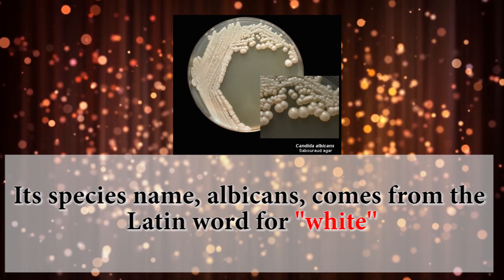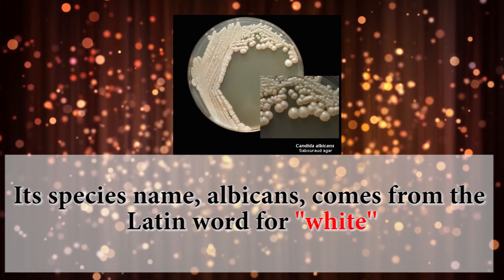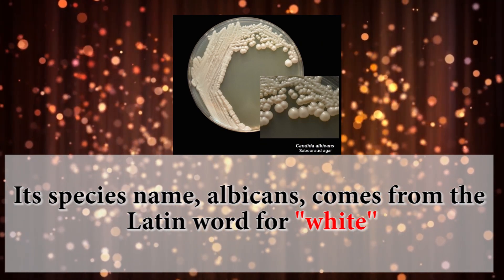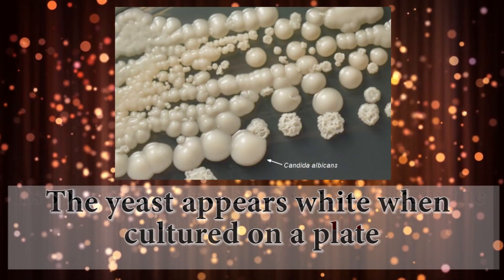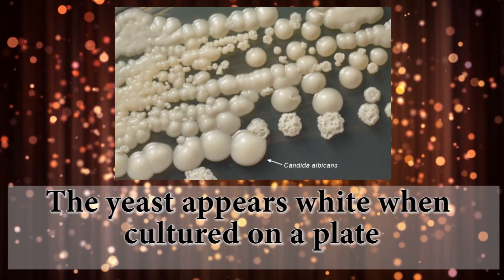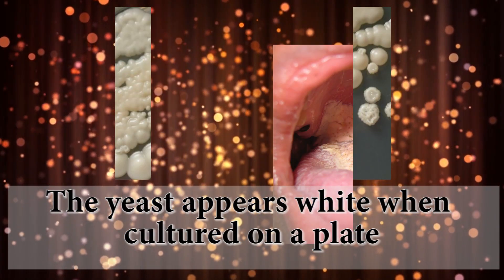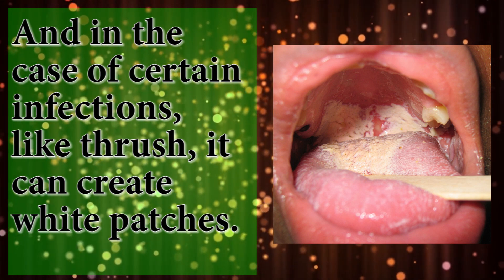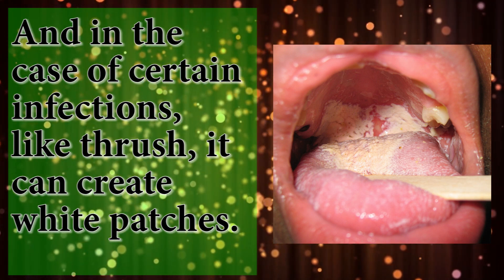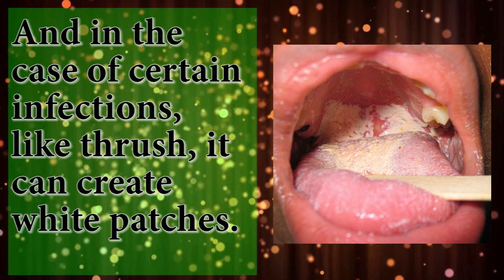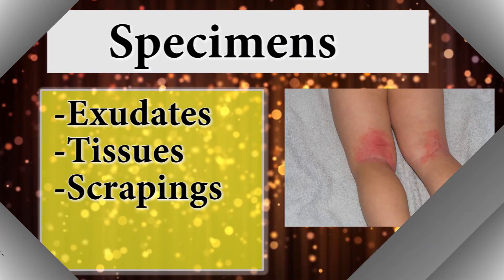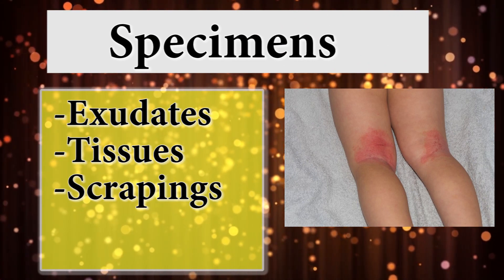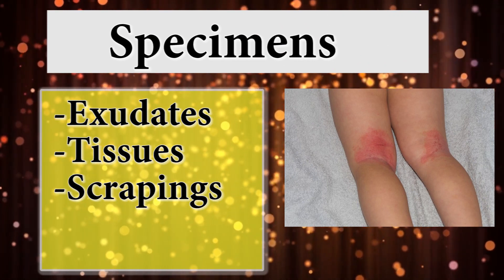The species name albicans comes from the Latin word for white. The yeast appears white when cultured on a plate, and in the case of certain infections like thrush, it can create white patches. Specimens include exudates, tissues, and scrapings.